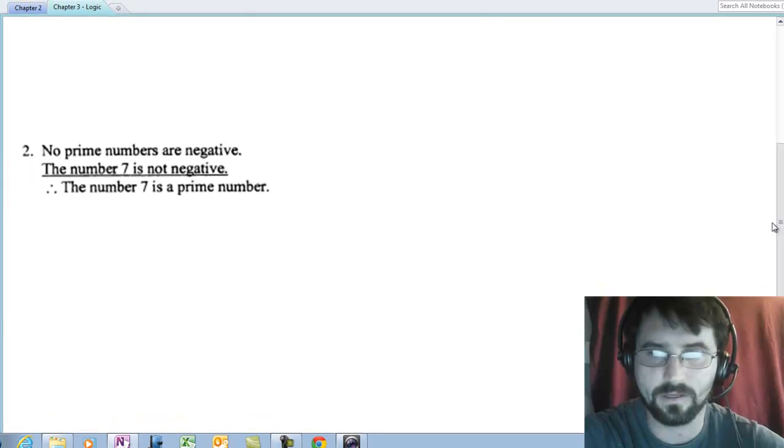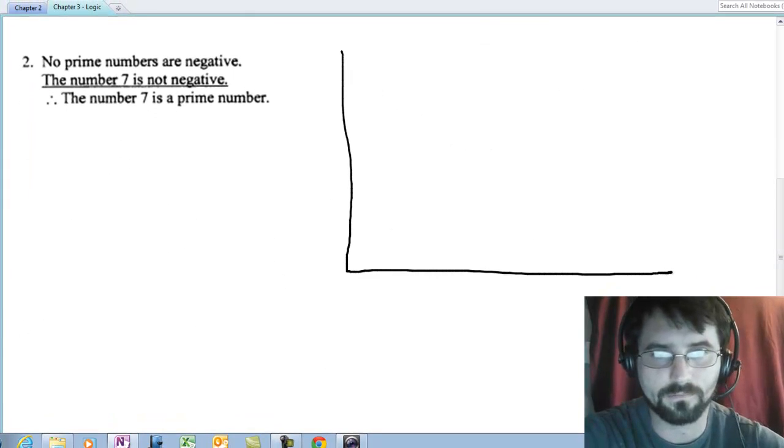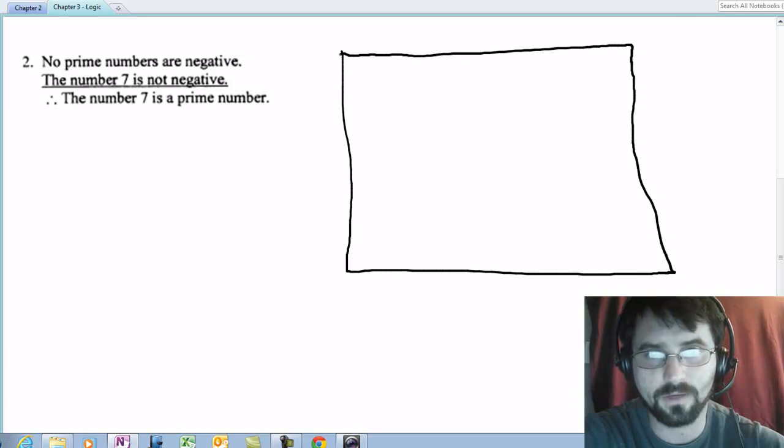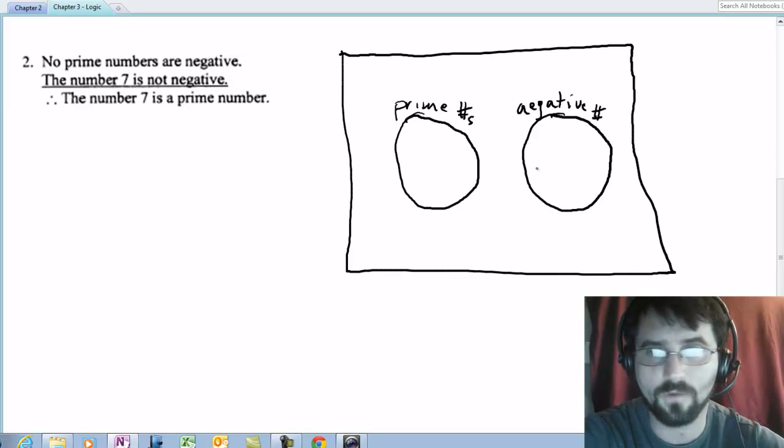Let's look at the next one. No prime numbers are negative. So let me just draw my universe. In my universe, we have prime numbers, we have negative numbers, and there is no overlap.